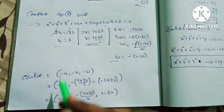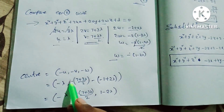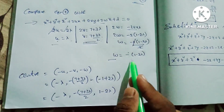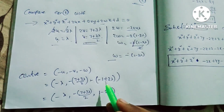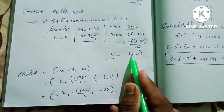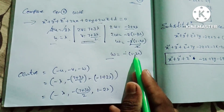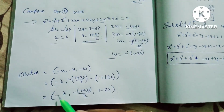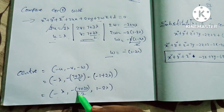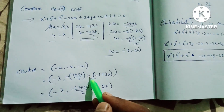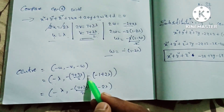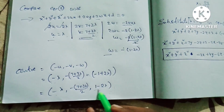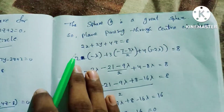So the center is: -u = -λ, -v = -(7 + 3λ)/2, and -w = -(-1 + 2λ) = 1 - 2λ. So the center is (-λ, -(7 + 3λ)/2, 1 - 2λ).